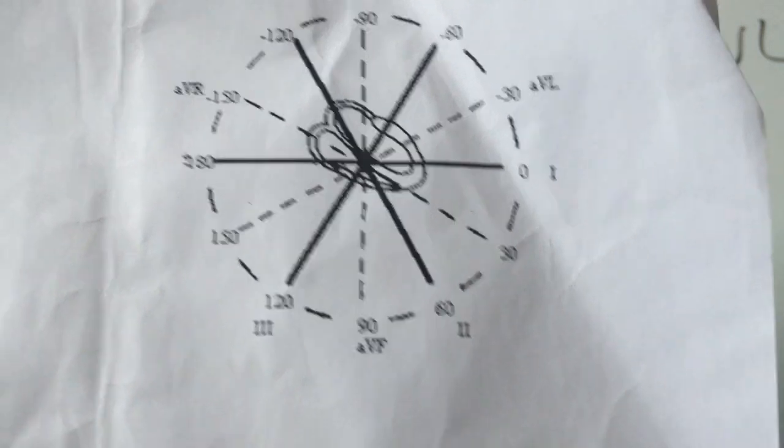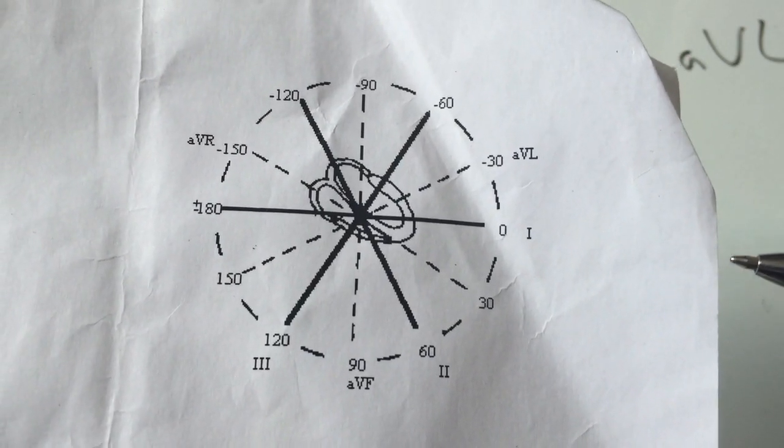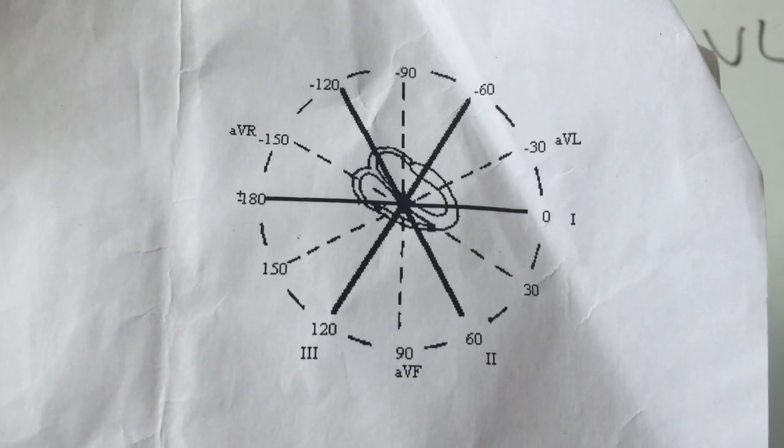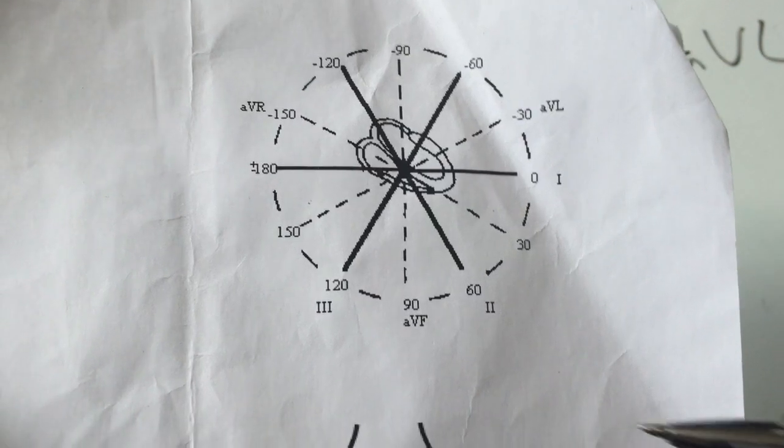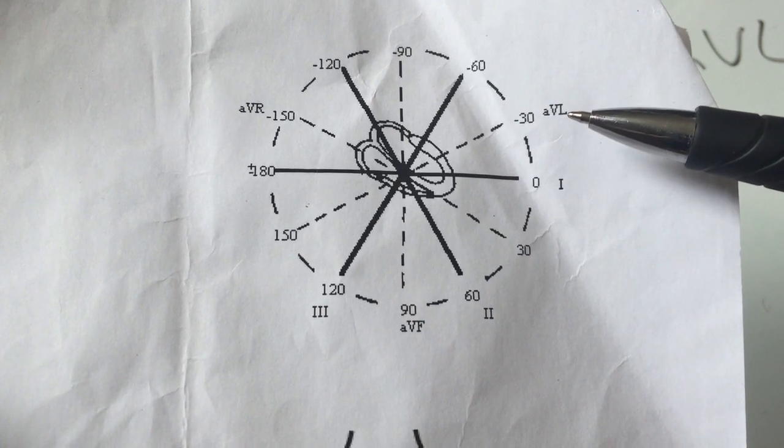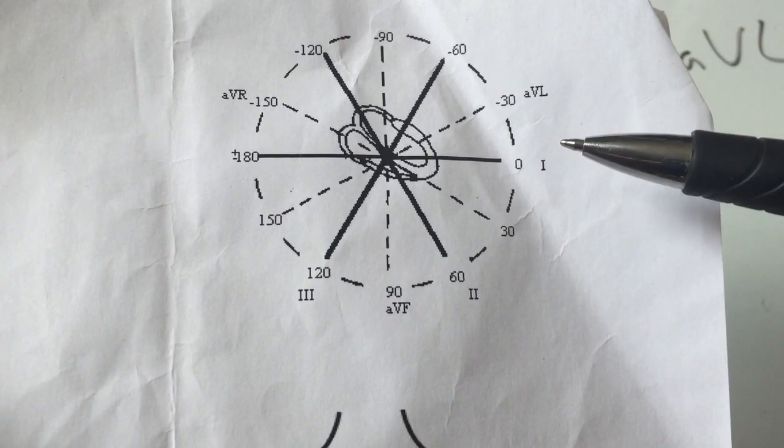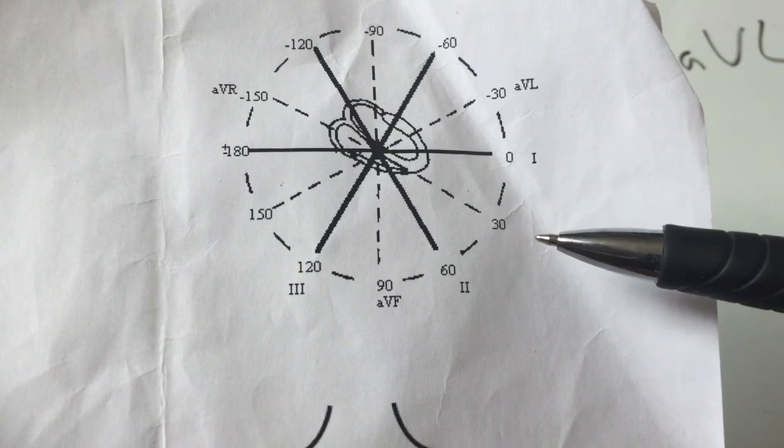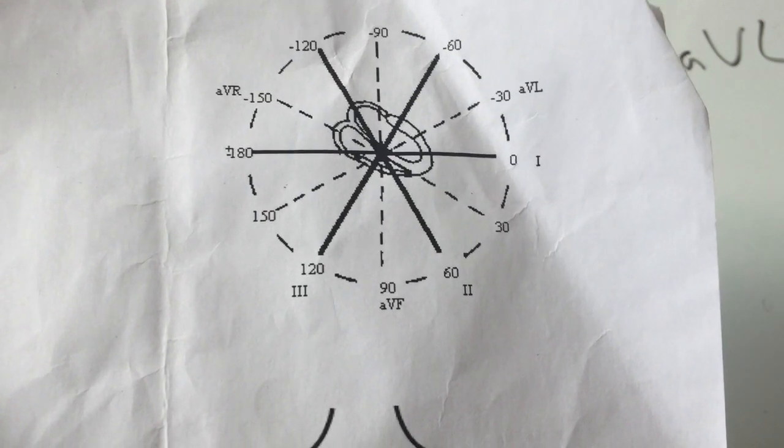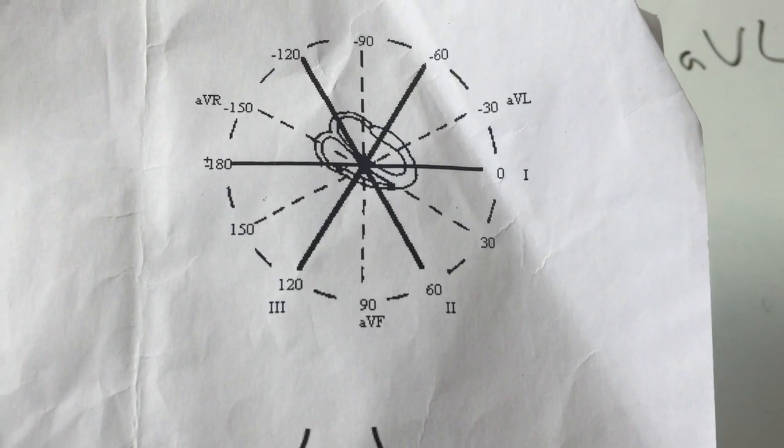So the first thing here is to take a look at the normal placement of leads and their impact on the vectors of depolarization. Normal depolarization vector should be somewhere between 90 degrees, AVF lead placement, and negative 30 degrees, which is AVL lead placement. So you expect your depolarization vector to be somewhere between these two lines. Normally it's somewhere in the middle, kind of where lead 2 is placed. That's why when you look at lead 2 in an EKG, it's normally the one you're most familiar with, with a standard PQRS wave complex.